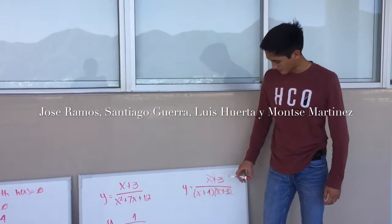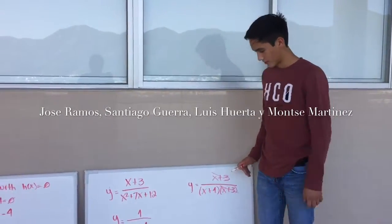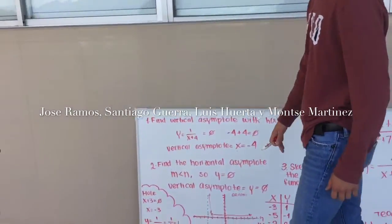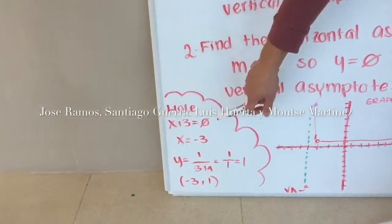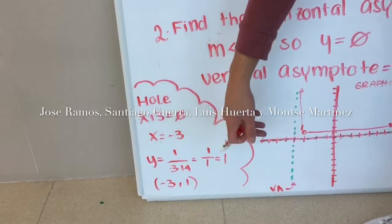Then we have to cancel terms, x plus 3 and x plus 3. Then we have to find the hole. In here, we put x plus 3 equals 0. Then you solve for x and you get x equals negative 3.